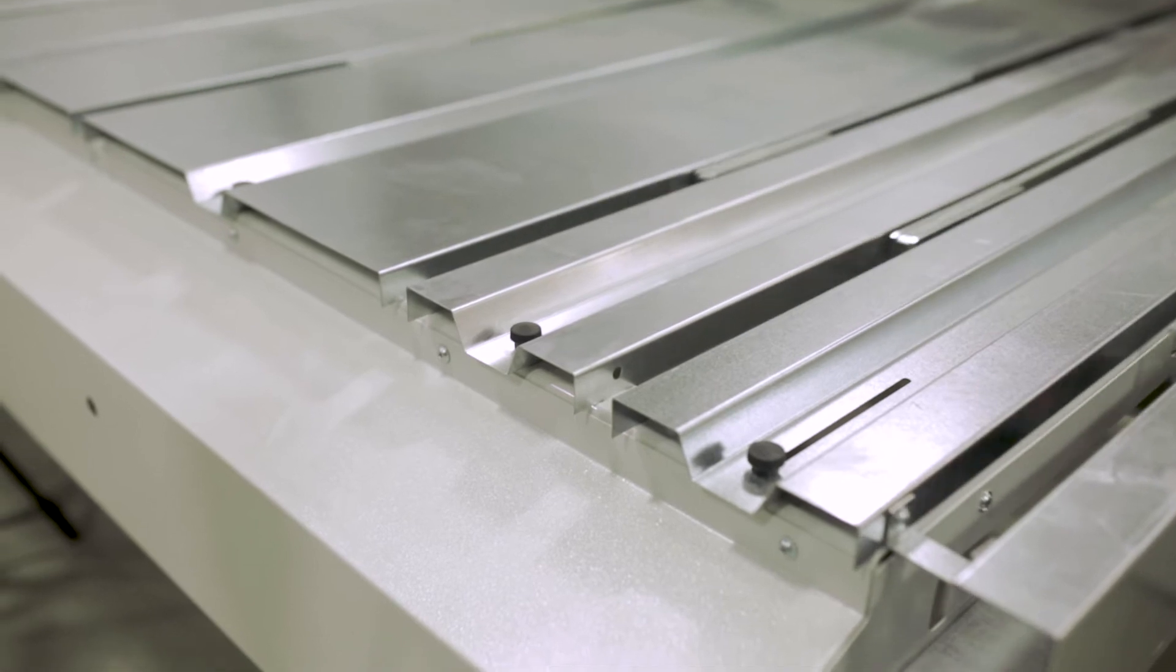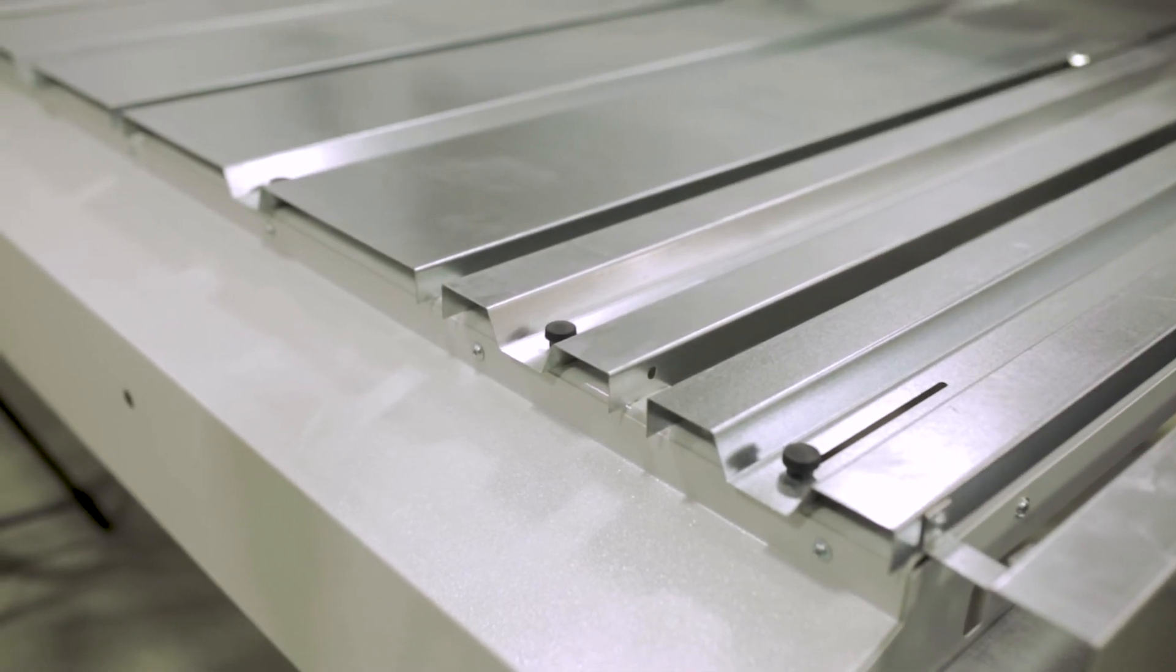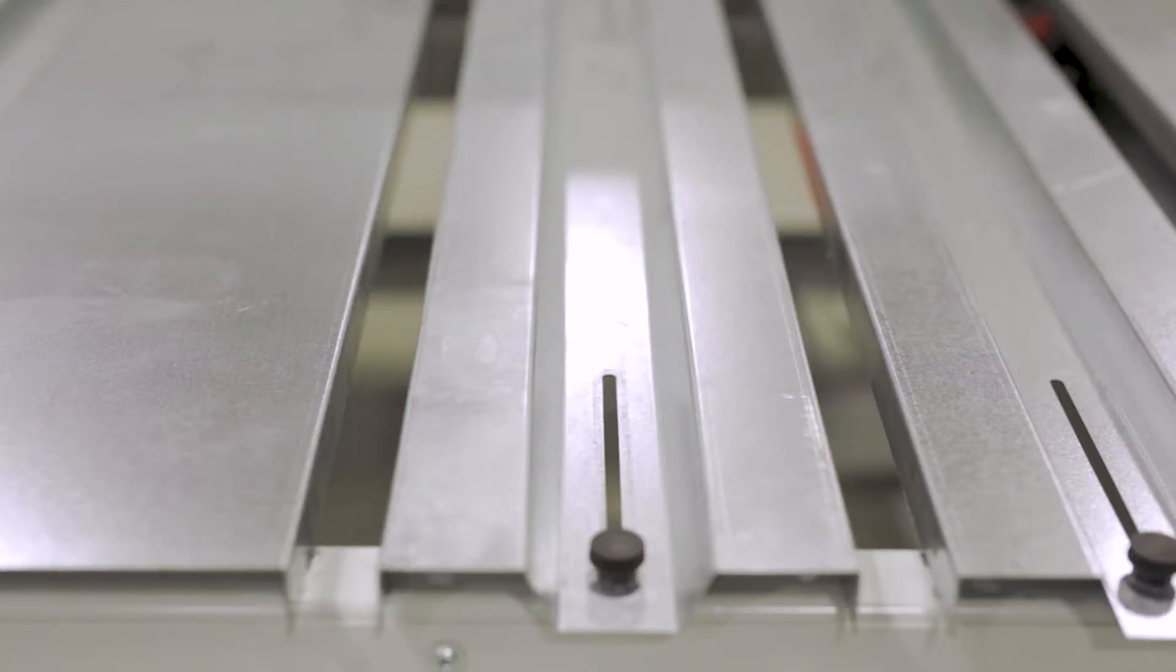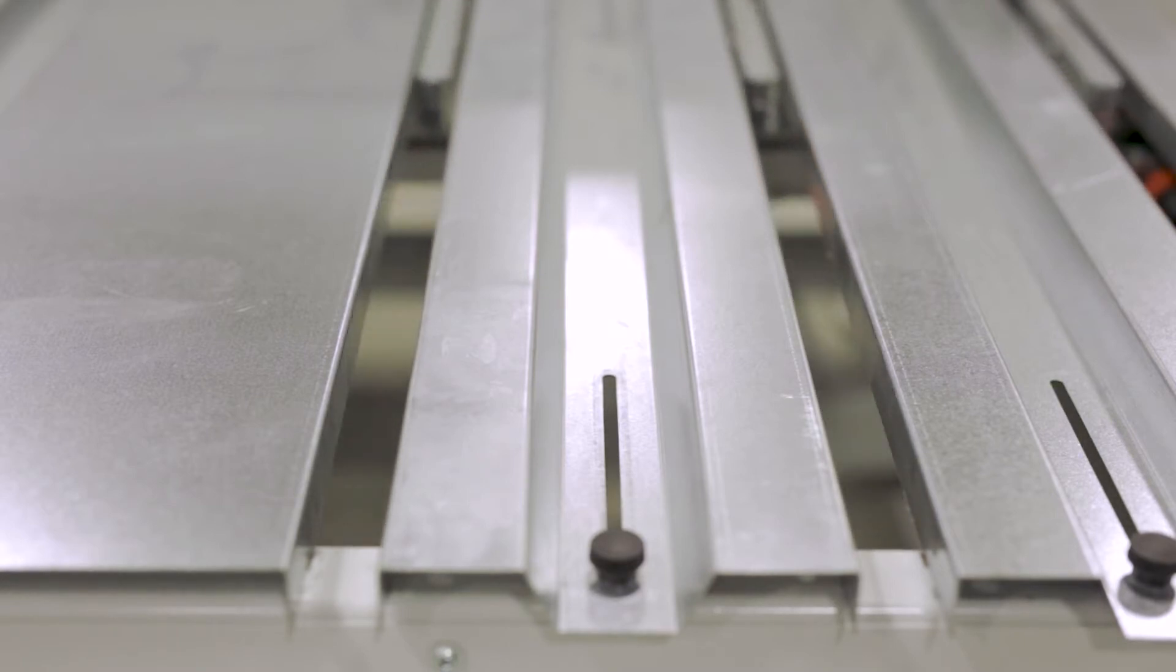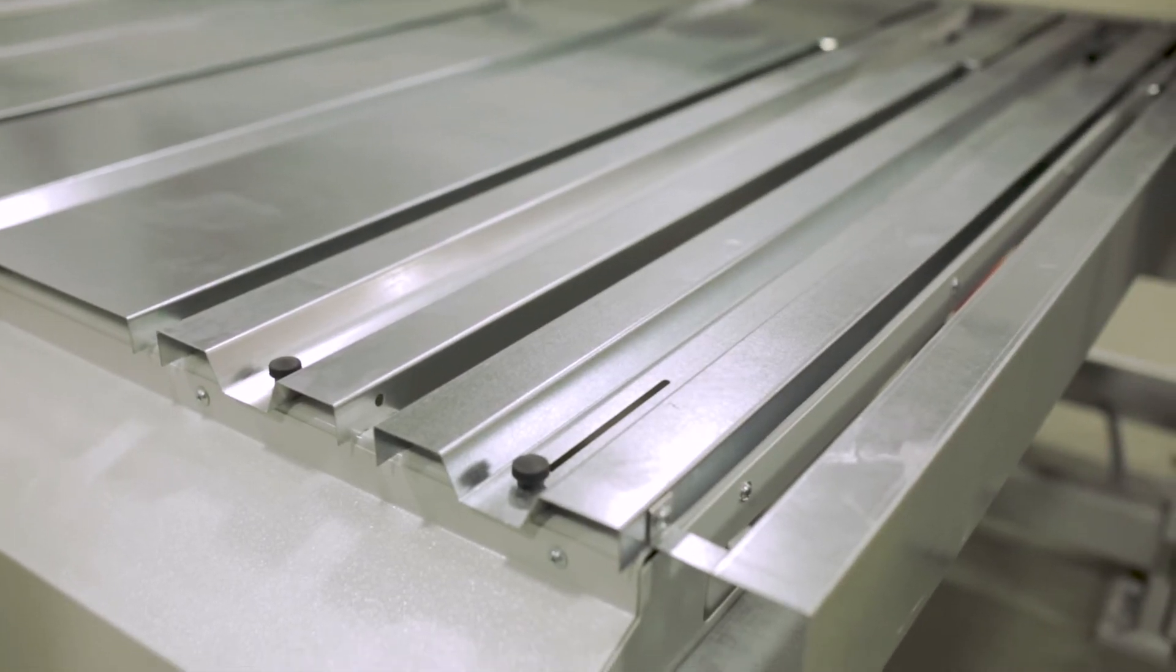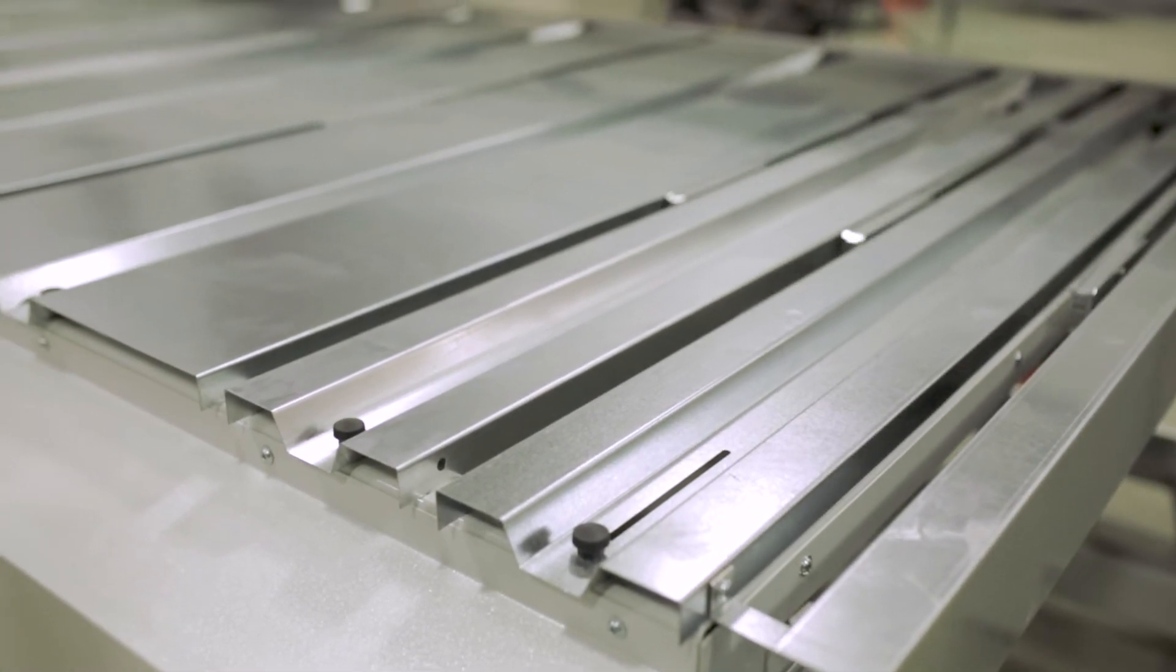The speed of a back gauge is very important and Junelle's is certainly no slouch. With forward speeds of 11.8 inches per second and reverse speeds of 19.7 inches per second, productivity will not be an issue.